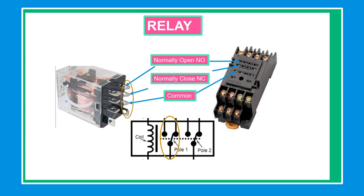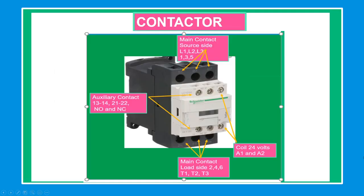Additionally, relays are widely used in heating equipment, pilot lights, and audible alarms. A magnetic contactor has three main contacts: Line 1, Line 2, Line 3 — also labeled 1, 3, 5 — and T1, T2, T3 — also labeled 2, 4, and 6. It also has many auxiliary contacts, including normally open and normally closed, used for interlocking and making other circuits.